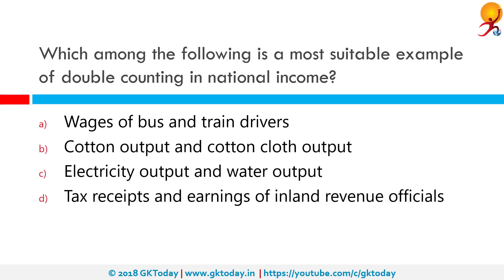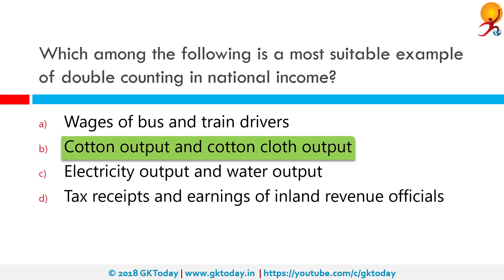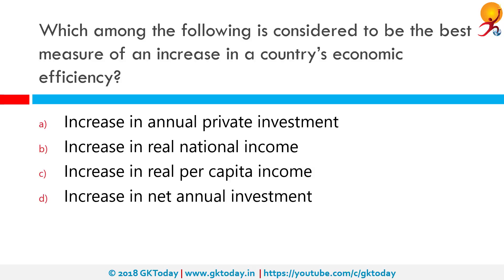In the given set of problems, cotton output and cotton cloth output is the correct answer. If we calculate both cotton output and cotton cloth output — given that cotton cloth is made of the cotton already accounted for — it is an example of double counting.